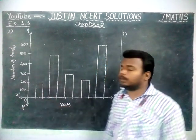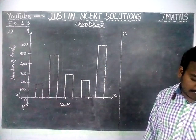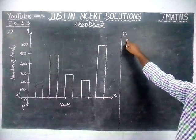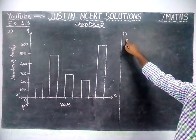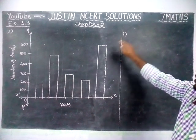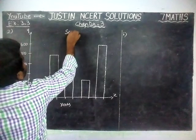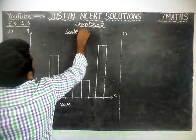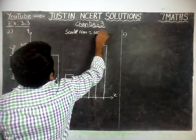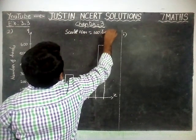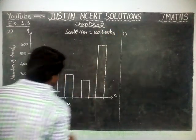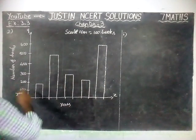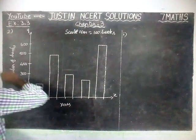The given data is by using the bar graph. We are going to find the following answers. Before that, the scale is: 1 cm is equal to 100 books. On the x-axis they have taken years, and on the y-axis they have taken the number of books.